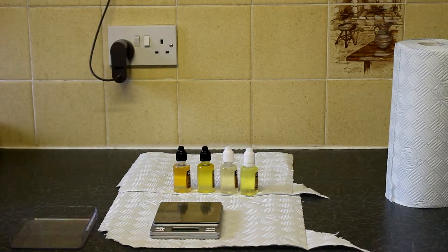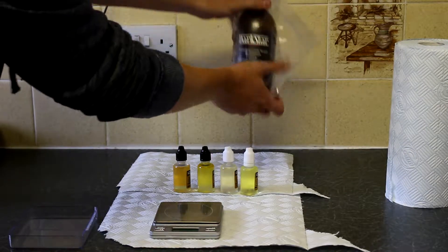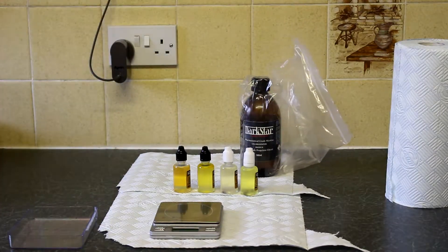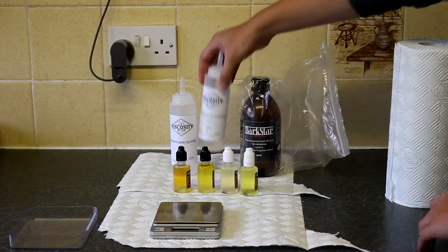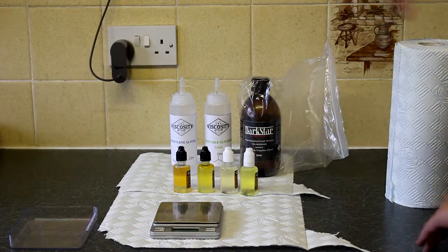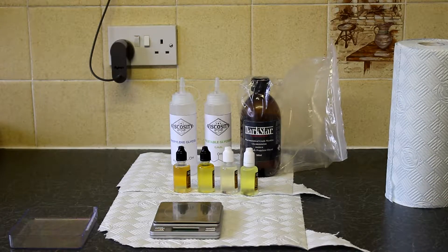This may sound stupid but how stuff's arranged makes a difference to how efficiently you can mix. I personally like to use what I call the SFB or the scales, flavors and base setup. The way I do this is by having my scales at the front and then a row of flavors behind them and then the bases and nicotine behind that.